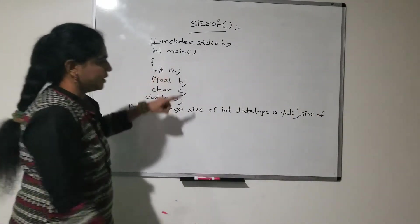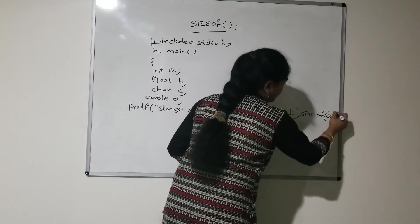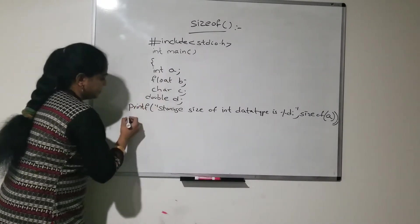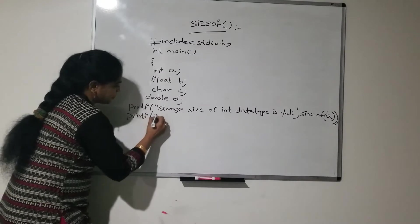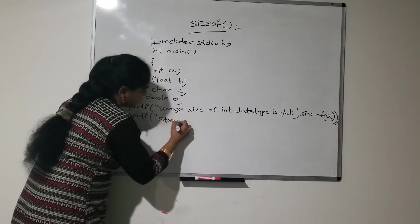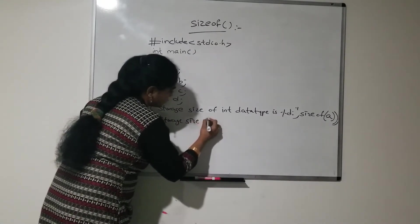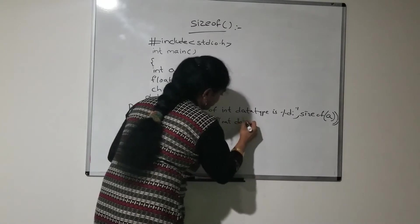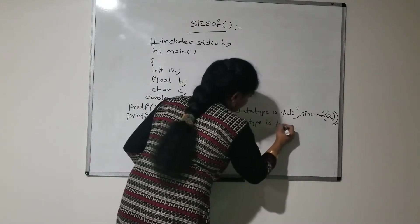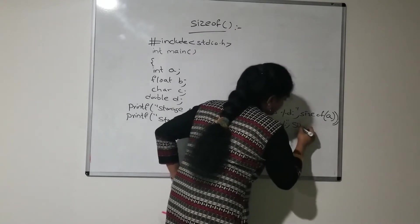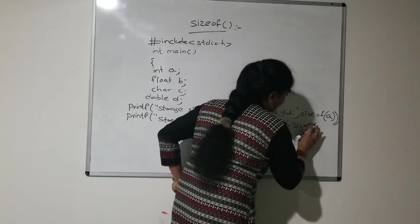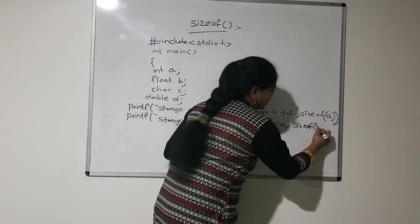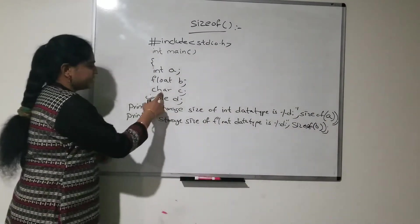Here for integer I have taken variable a, and within the sizeof function I pass that variable. Similarly, for all these variables — printf storage size of float variable — float data type is %d sizeof(b). Here what is the variable I have taken for float? Here for float I have taken b, so sizeof(b).